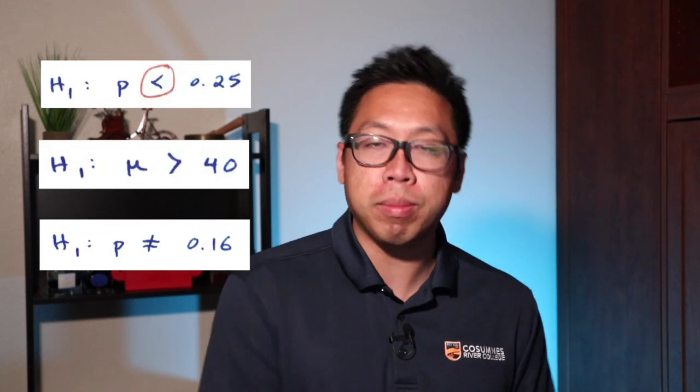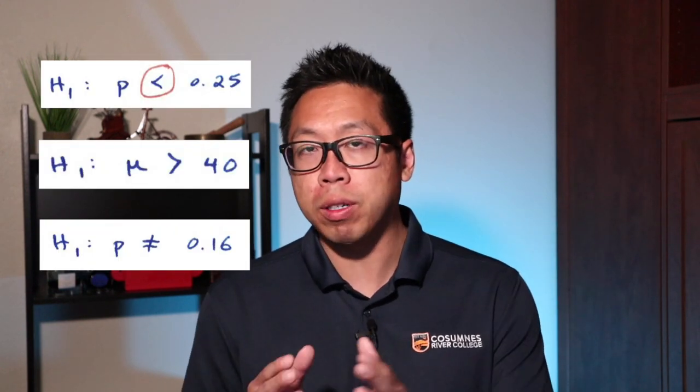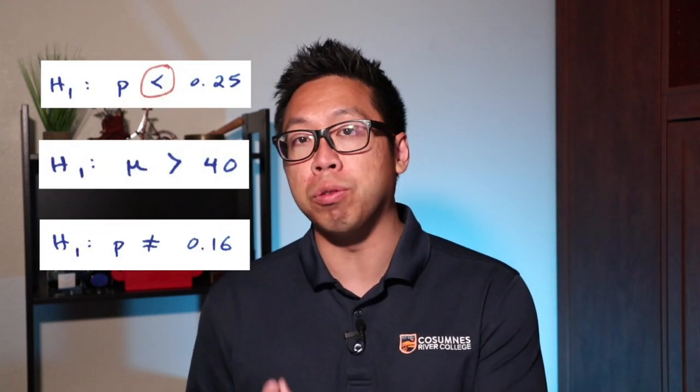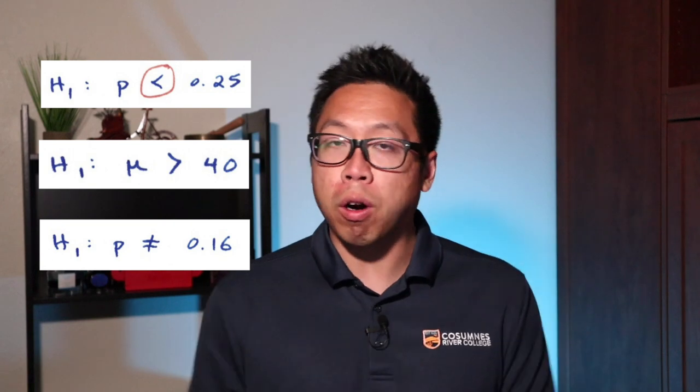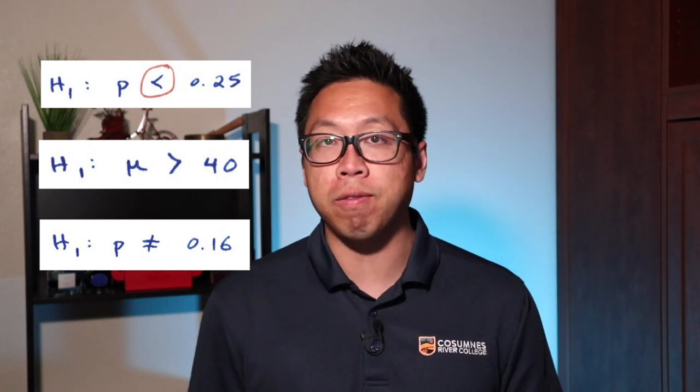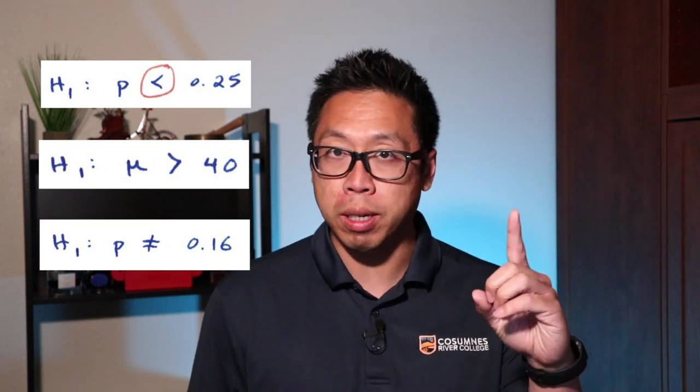In the last lecture, we introduced the idea of hypothesis testing. In all the examples we talked about, we took a sample and wanted to know whether there was enough evidence to conclude that either the mean or proportion is less than, greater than, or not equal to a single number. Those are all examples of hypothesis tests involving one sample. Today, we'll talk about situations that involve two samples, and this shows up a lot in real life.